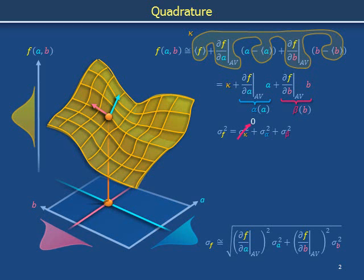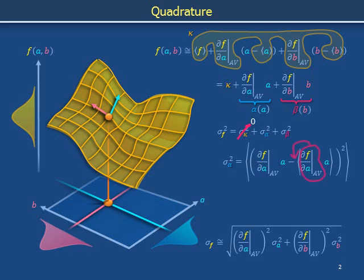Kappa does not fluctuate. The variance in alpha is the average of the square of alpha evaluated at an individual value of A minus the average value of alpha, meaning averaged across the distribution of values of A. The slope of F in the A direction appears twice — as a constant, it can be brought outside the averaging brackets and outside the squared parentheses. The variance of alpha equals the square of the partial derivative of F with respect to A multiplied by the average of the square of the difference between A and its average value, which is simply the variance of A. Substituting back and performing analogous steps for beta and B provides the quadrature formula.